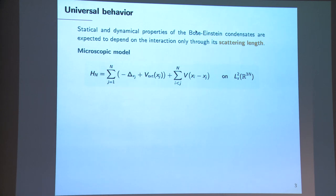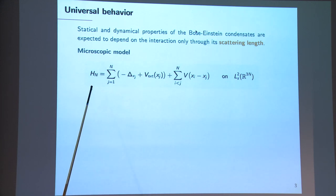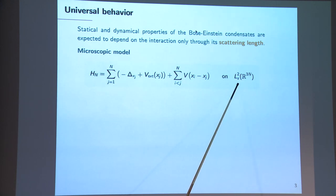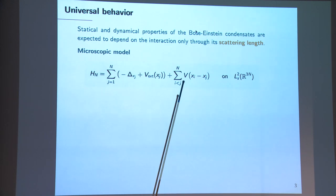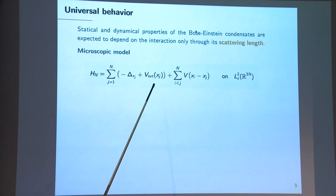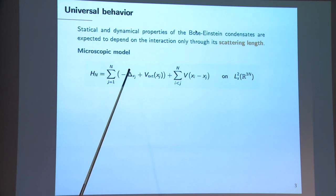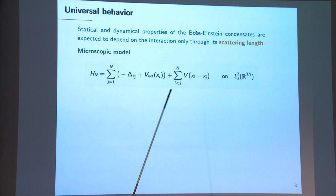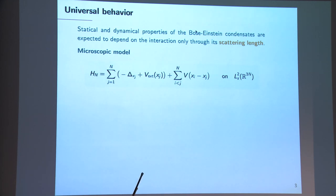From a mathematical point of view, we aim to prove this universality result starting from a microscopic description provided by a many-particle Hamiltonian acting on the symmetric subspace of L²(R^{3N}). You recognize here the one-particle part of the Hamiltonian: the kinetic energy, the trapping potential, and the two-body interaction. The scattering length is an effective parameter associated to this interaction, defined as follows.